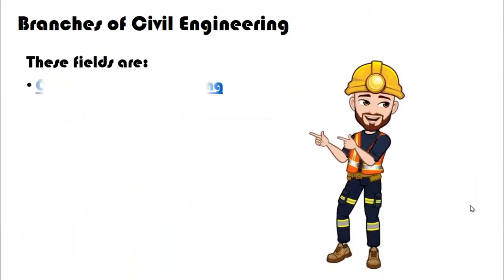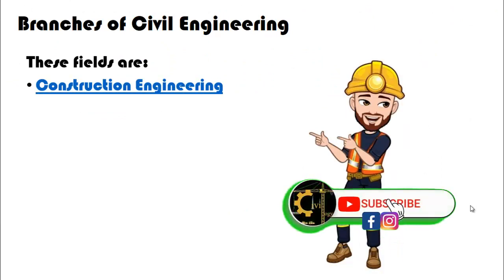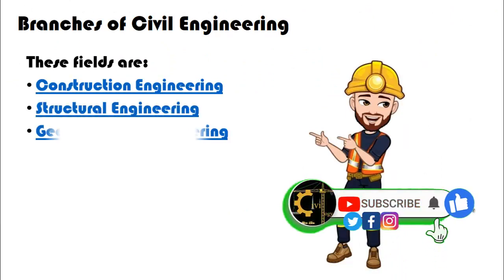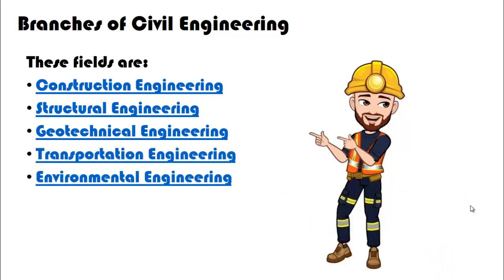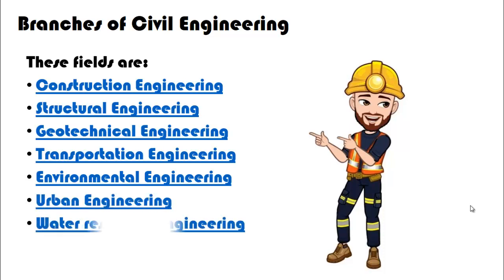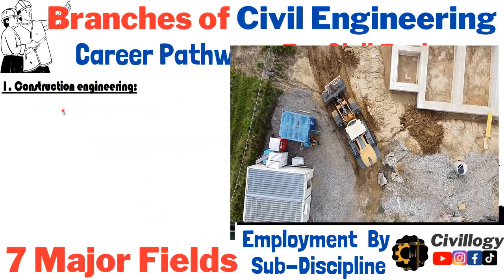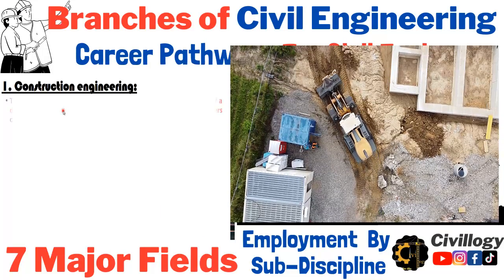Here are the seven main fields of civil engineering: first is construction engineering, second is structural engineering, third is geotechnical engineering, fourth is transportation engineering, fifth is environmental engineering, sixth is urban engineering, and seventh is water resources engineering.